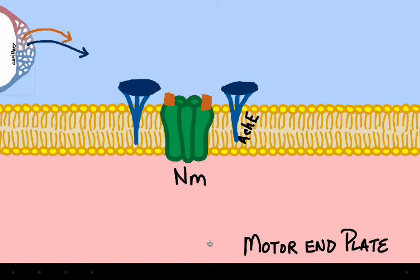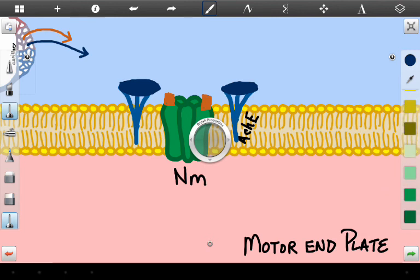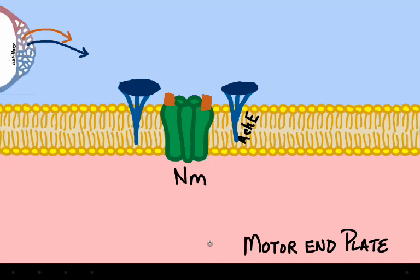This does not allow acetylcholine to be broken down. And so now, acetylcholine builds up in the synapse.